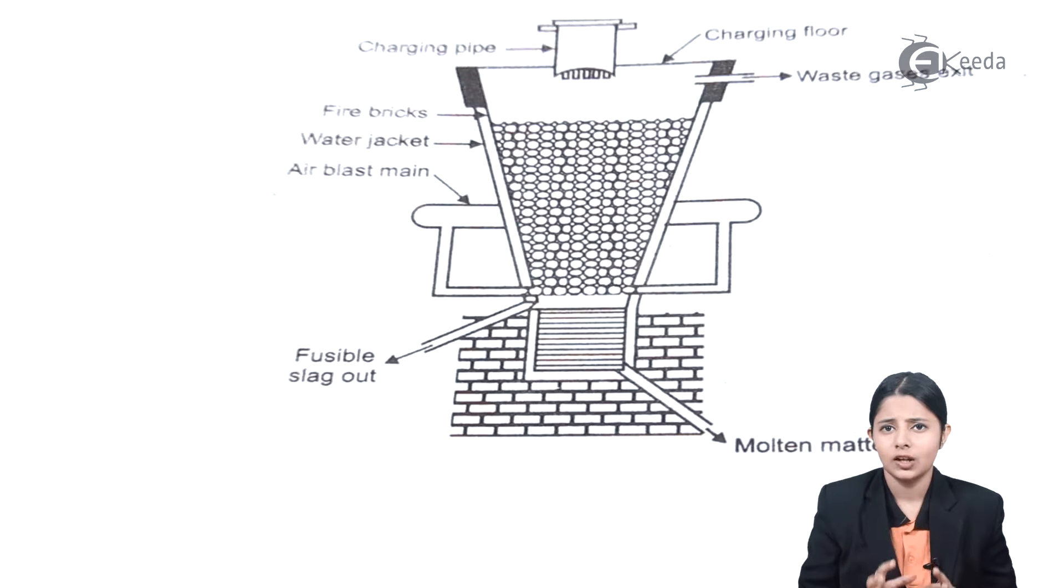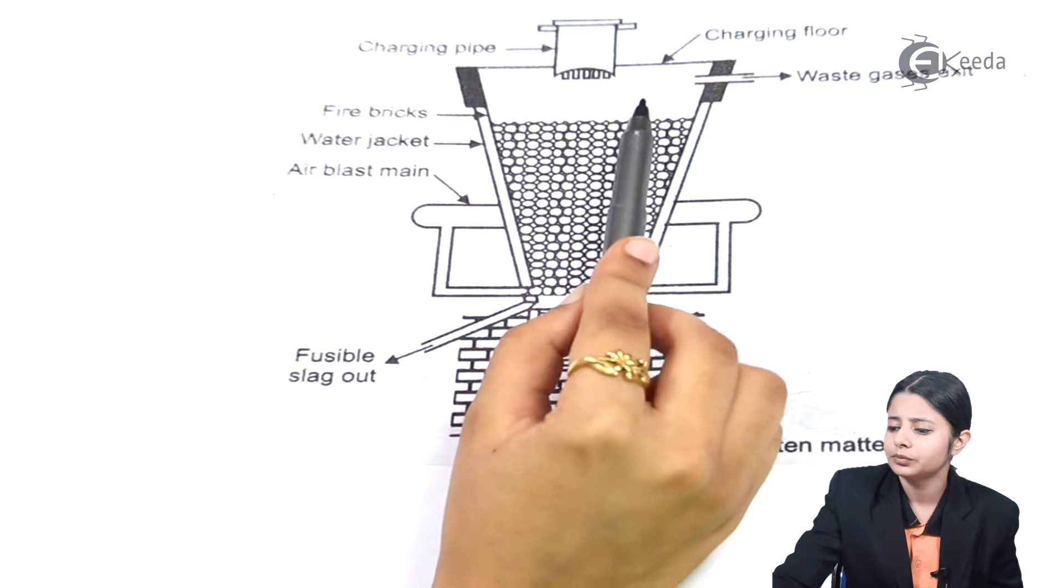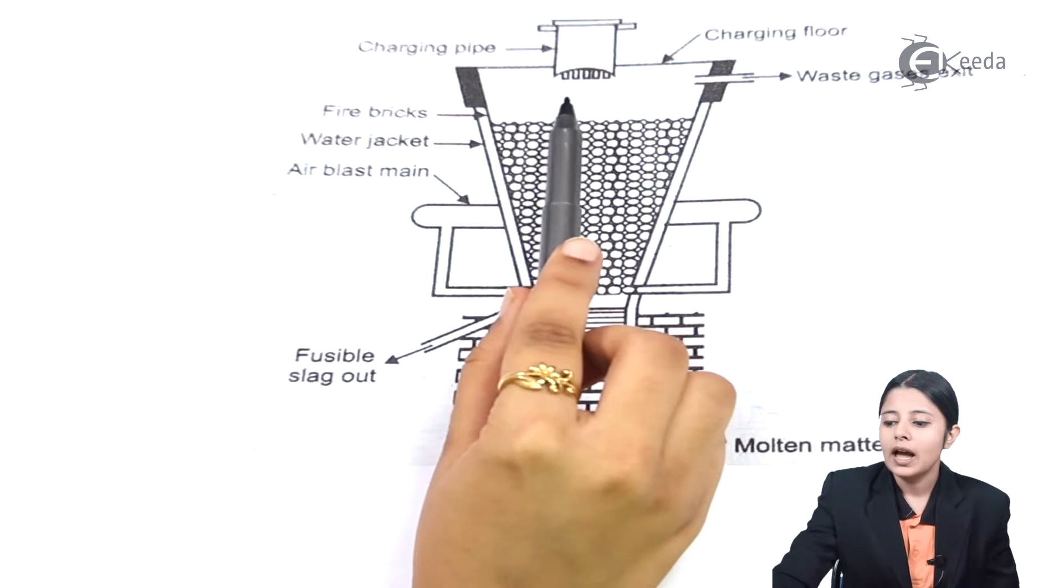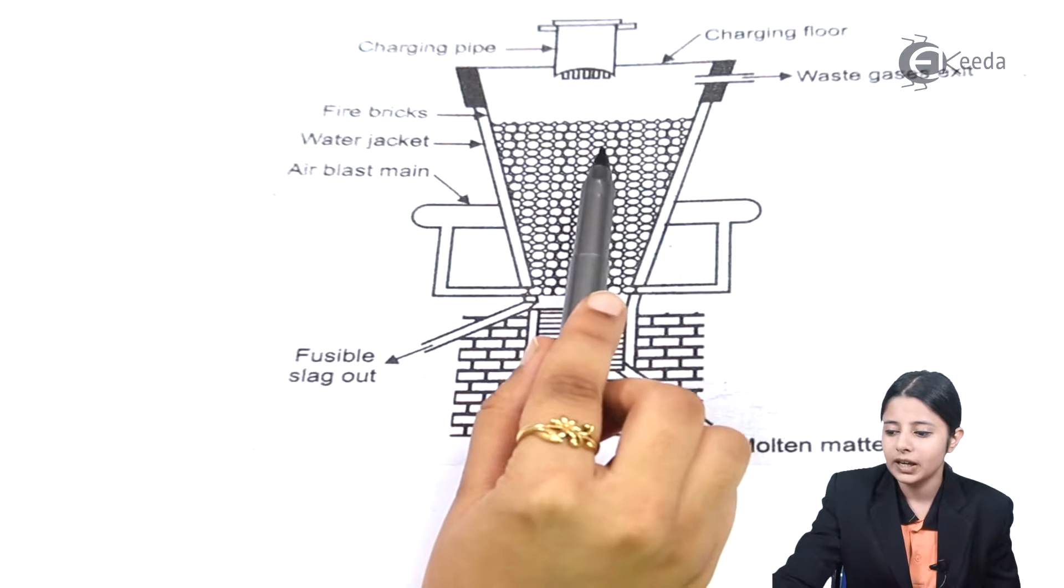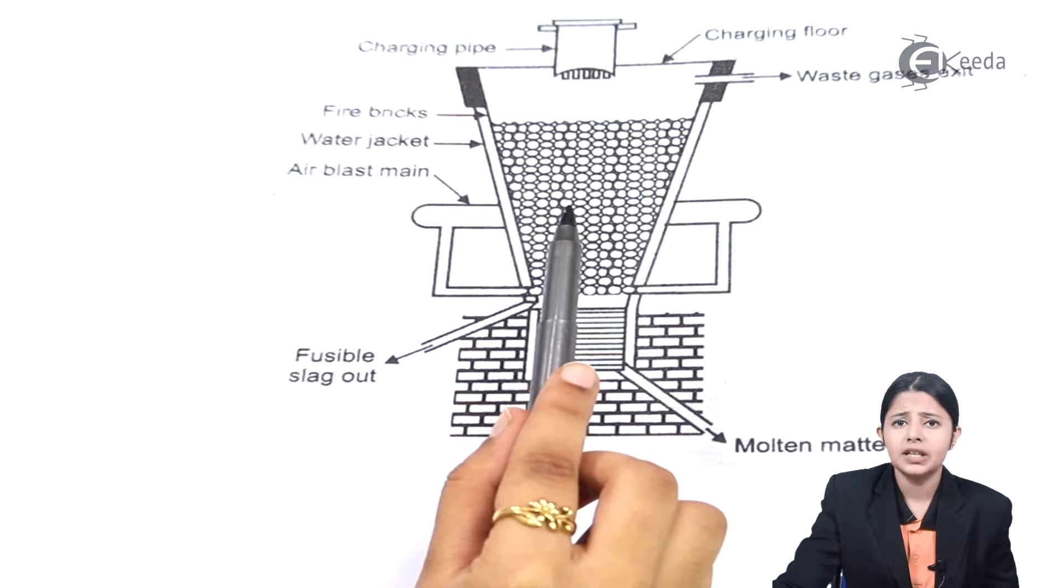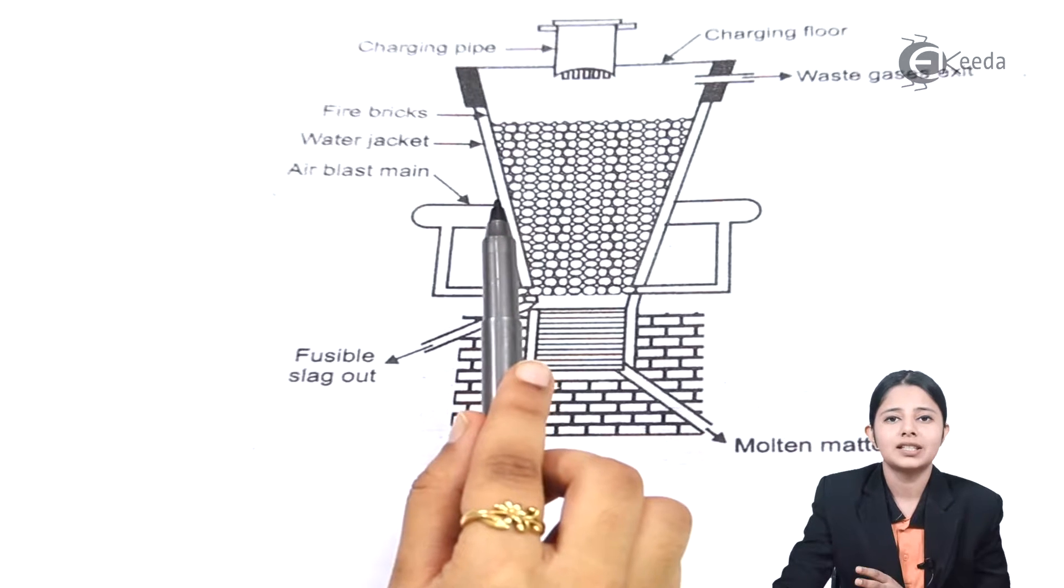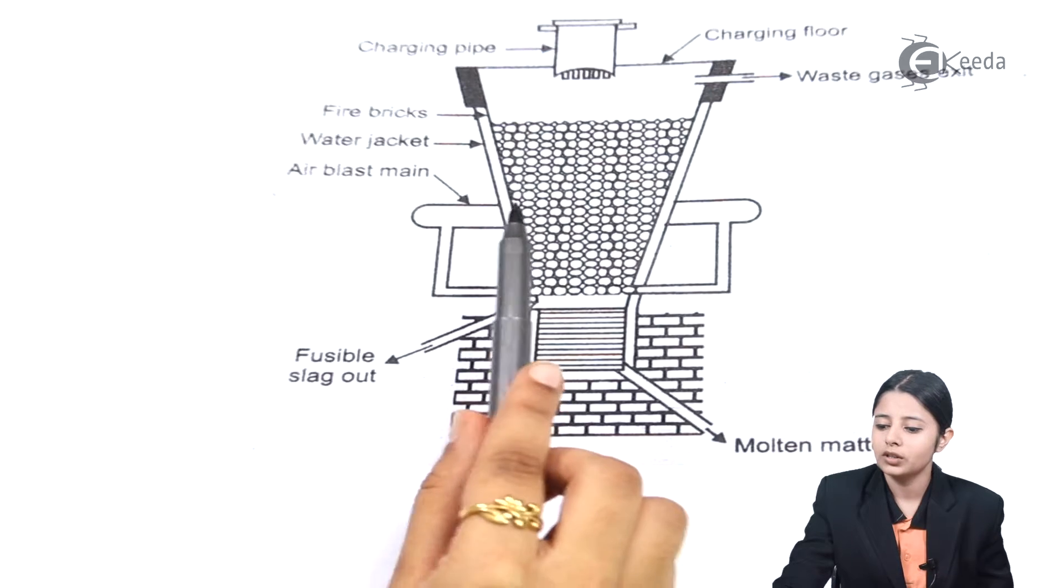Now what is charge? It is the ore mixed with coke and silica in proper proportions. This is passed into the water jacket blast furnace. Inside there are fire bricks. Fire bricks help to increase the temperature. And since the temperature increases the reactions will happen smoothly. Now all the reactions which take place will have a lot of by-products in it. We have seen that most of the reactions taking place have something volatile forming a by-product. And that volatile will go away in the air.